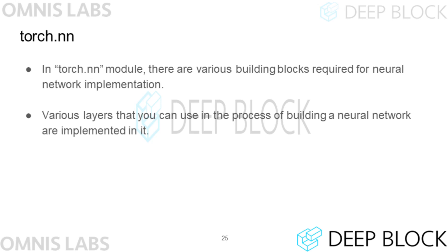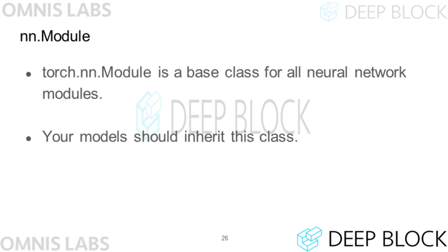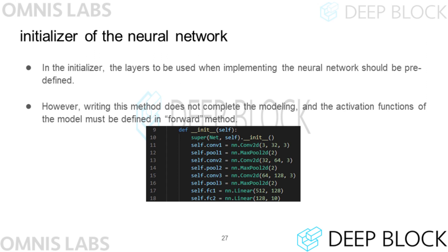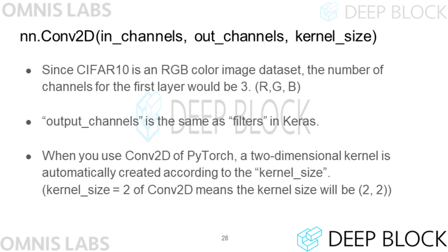torch.nn.Module contains various layers and classes used to implement neural networks, and is the parent class of all neural network classes. In order to implement a neural network with PyTorch, this class must be inherited when defining a model. The initializer of the PyTorch neural network class is responsible for preparing the necessary layers for the model. It is not possible to design the model by implementing only this method; the process of connecting layers in the forward method is also required. When image data enters the model, this data first goes through the convolutional layer.